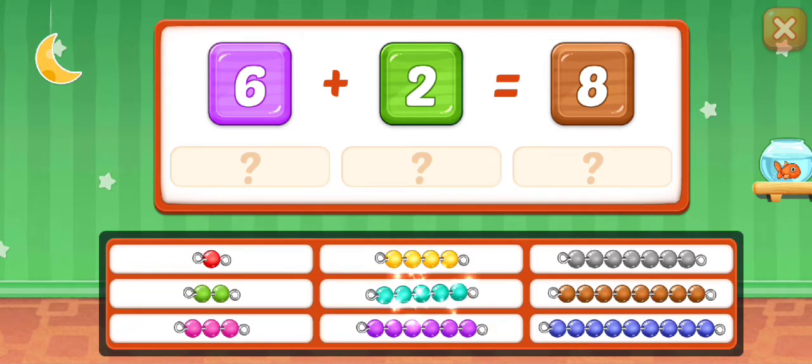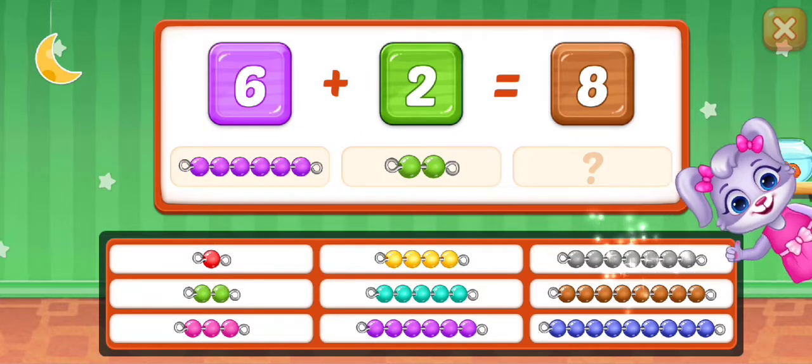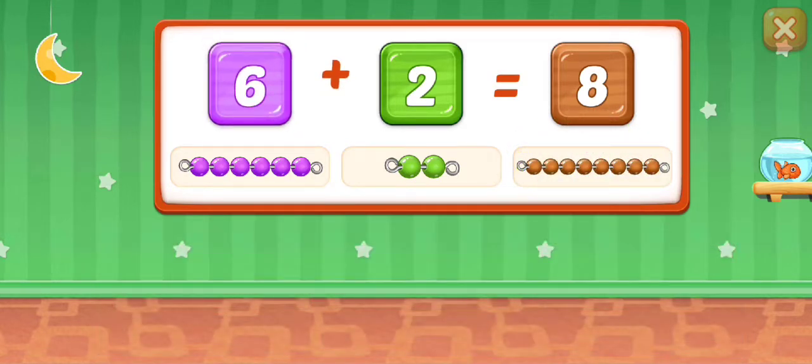Five. Six. Two, two, two. Superb! Seven, eight, eight. Six plus two equals eight.